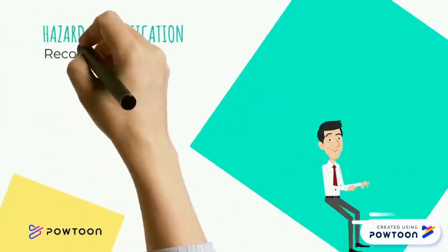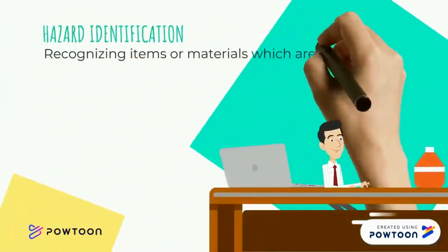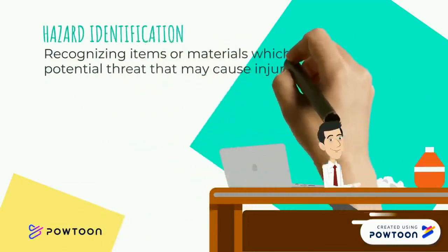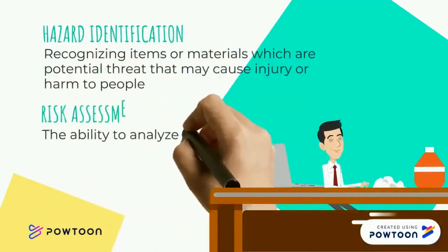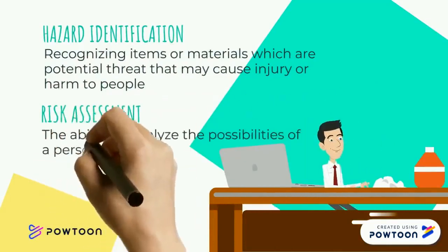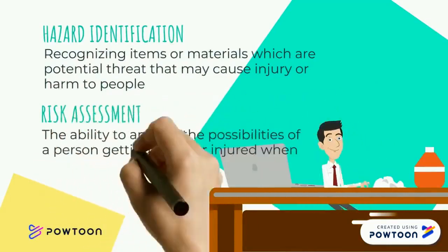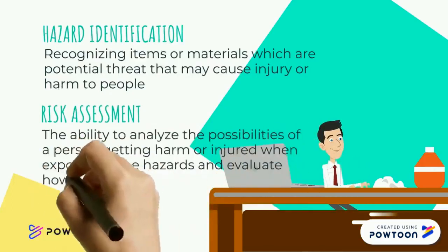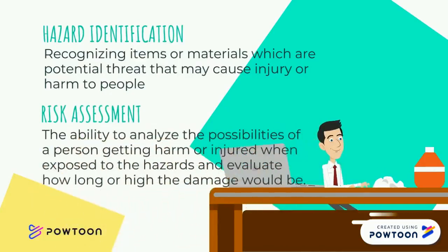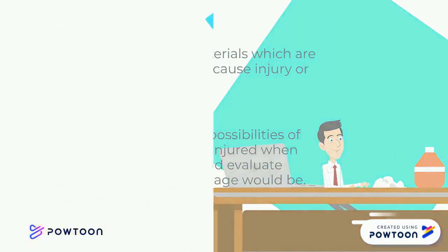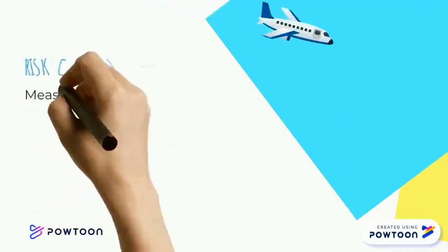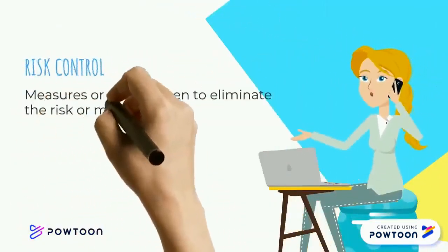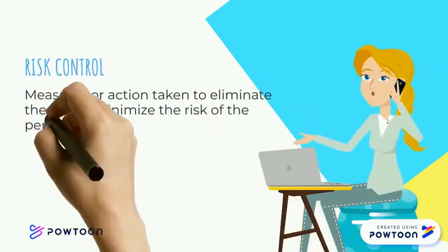Hazard Identification involves recognizing items or materials which are potential threats that may cause injury. Risk Assessment is the ability to analyze the possibility of a person taking harm or being injured when exposed to the hazard. Lastly, Risk Control refers to measures or actions taken to eliminate or minimize the risk of a person being exposed to the hazard.